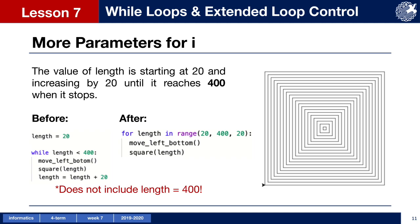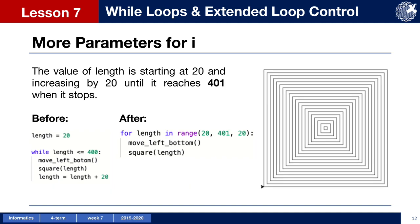It's very important that 400 is not included in our loop. So if we wanted our final square to have a length of 400, we would need to make the ending value greater than 400. So let's just use 401 instead.